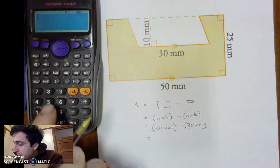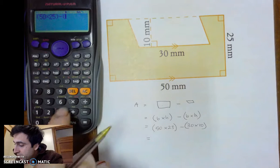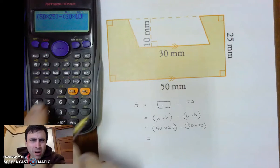50 times by 25, close bracket, minus bracket, 30 times by 10, close bracket, equals, Oh, my God!